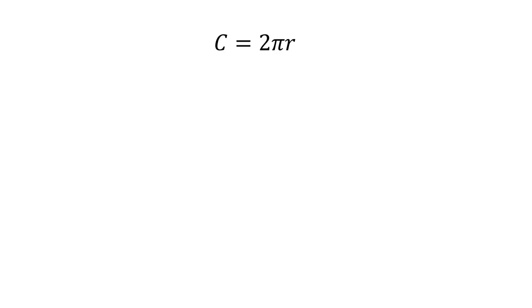The next formula is c equals 2 pi r. This is the circumference of a circle with radius r.